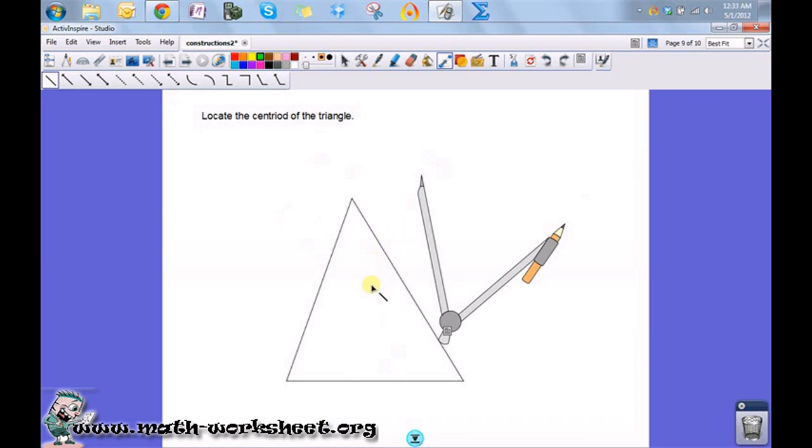The centroid of a triangle is where the three medians of the triangle intersect. Now you only really need to find two, and the median connects the midpoint of a side to its opposite angle.